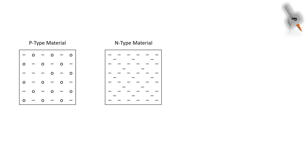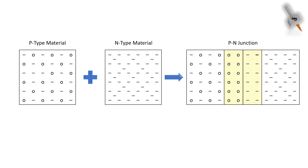This type of material has a net negative charge, hence the n-type material. To fabricate a p-n junction we need a p-type and an n-type material. When joined, the holes and electrons combine at the junction, resulting in a layer with an electric field of its own which does not allow further charge to combine. This layer is called the depletion layer.